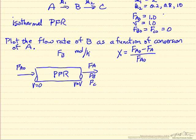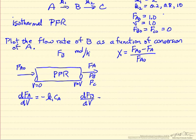The mass balance for A gives the change in molar flow rate of A with respect to cumulative volume, equal to minus K1 times the concentration of A. The mass balance for B has two terms: we're forming B in the first reaction, so plus K1 times the concentration of A, and consuming it in the second reaction. The change in flow rate of C with respect to volume is K2 times the concentration of B.